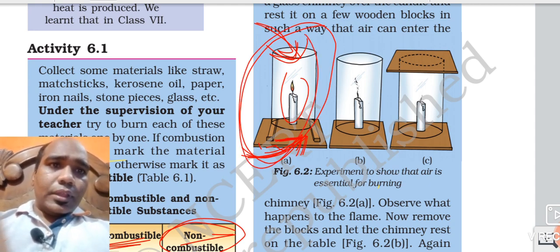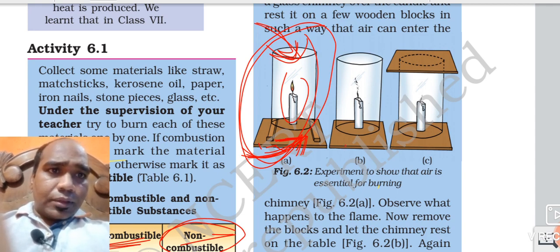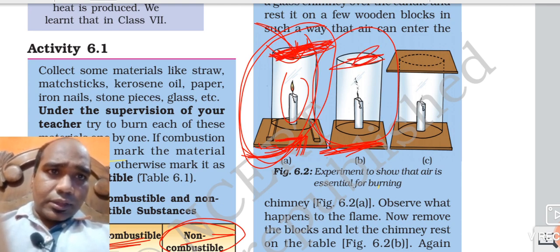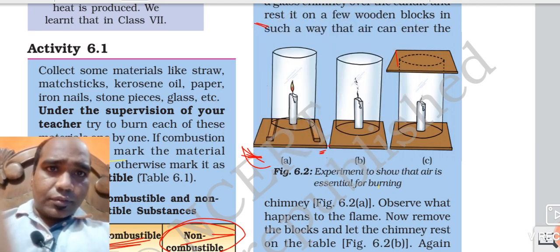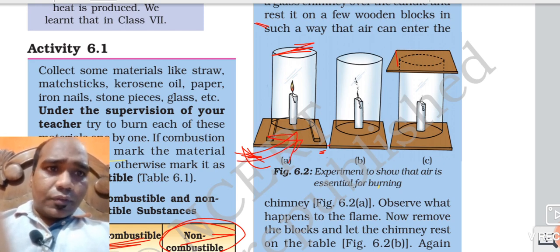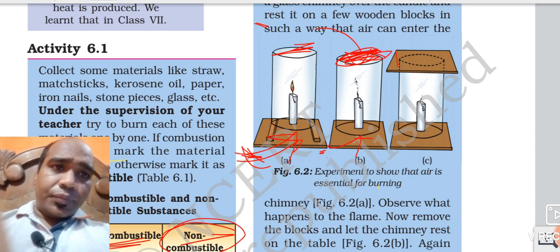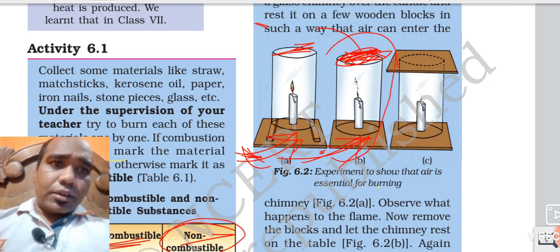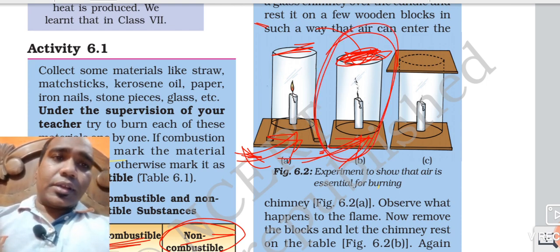Now when this one is covered - bottom is also covered and top is also covered - air is not coming from the top, it is covered from the top. But air is coming from the bottom part, so the candle is still burning. But when air is not going from bottom also and from top also, the candle is not getting the supply of air - means the supply of oxygen. So now it has stopped burning. Combustion is not taking place.